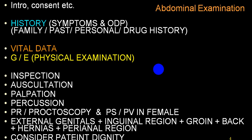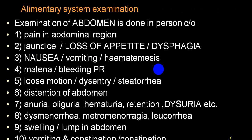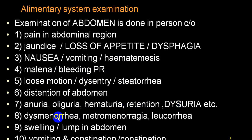While doing all this examination you should maintain patient dignity. Abdominal examination is done in any person who comes with pain in the abdominal region, jaundice, loss of appetite, dysphagia, persistent nausea, vomiting, hematemesis, melena, bleeding per rectum, hematochezia, loose motions, dysentery, steatorrhea, distension of abdomen, urinary complaints like anuria, oliguria, hematuria, retention of urine, dysuria. In females: dysmenorrhea, menorrhagia, leucorrhea, or if someone comes with swelling or lump in abdomen, vomiting, constipation, or alternate vomiting with constipation.